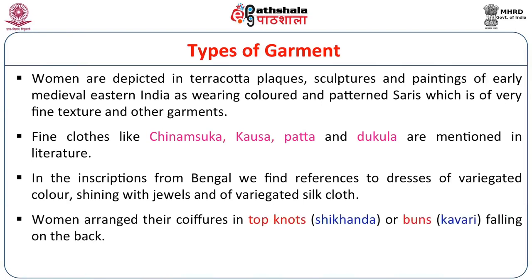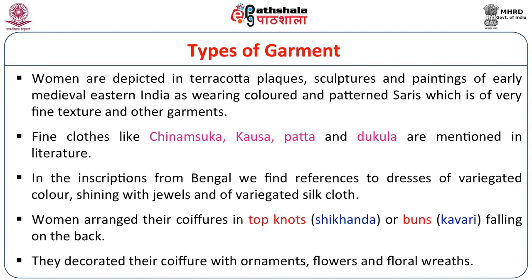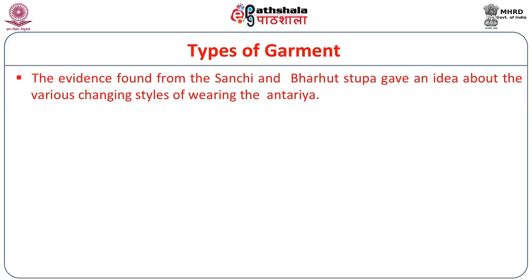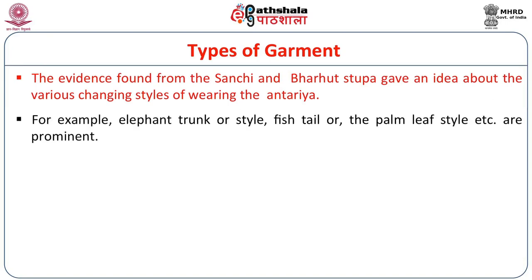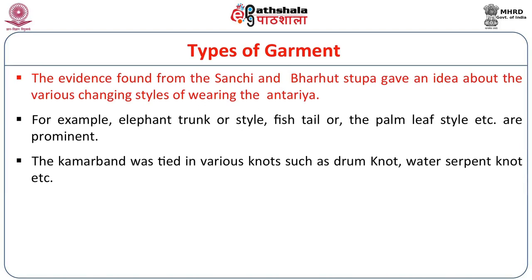Women arranged their coiffure in top knots, called shikhanda or bans kawhari, falling on the back, and decorated their coiffure with ornaments, flowers and floral wreaths. Even in marriages, we have representations of being decorated with flower ornaments. Now, if we look at the narrative art of Sanchi and Bharhut, particularly the Buddhist narrative art, we find that it gives us an idea of the various changing styles of wearing the antariya, the inner garment. For example, the elephant trunk style, fish tail or the palm leaf style are prominent. The kamarband, which is actually the mekhola, was tied in various knots such as drum knot, water serpent knot, and these are very beautifully reflected in the art.